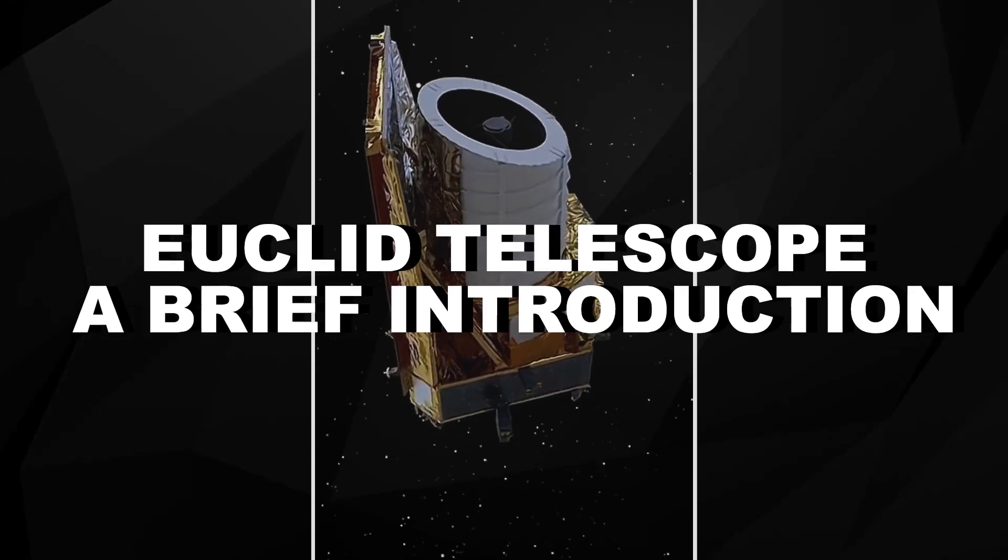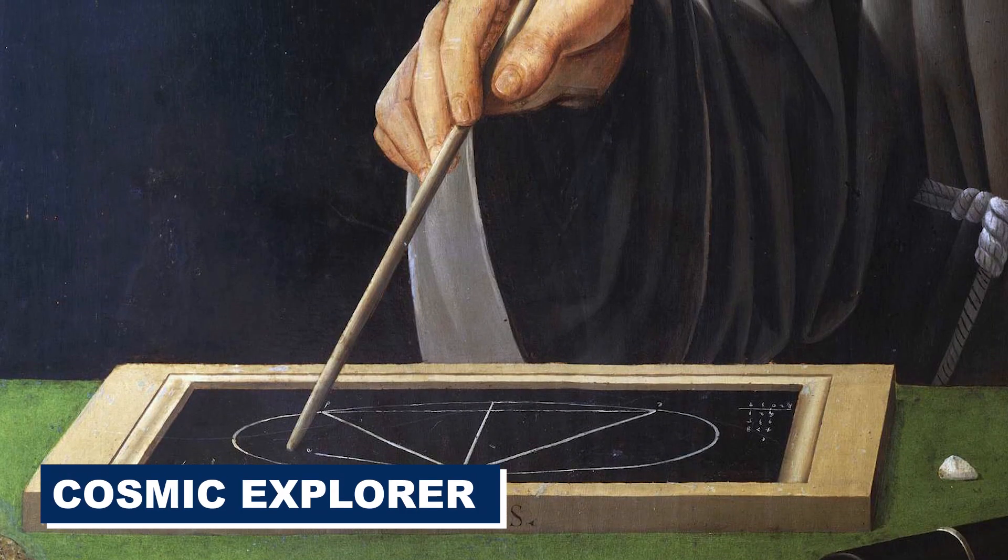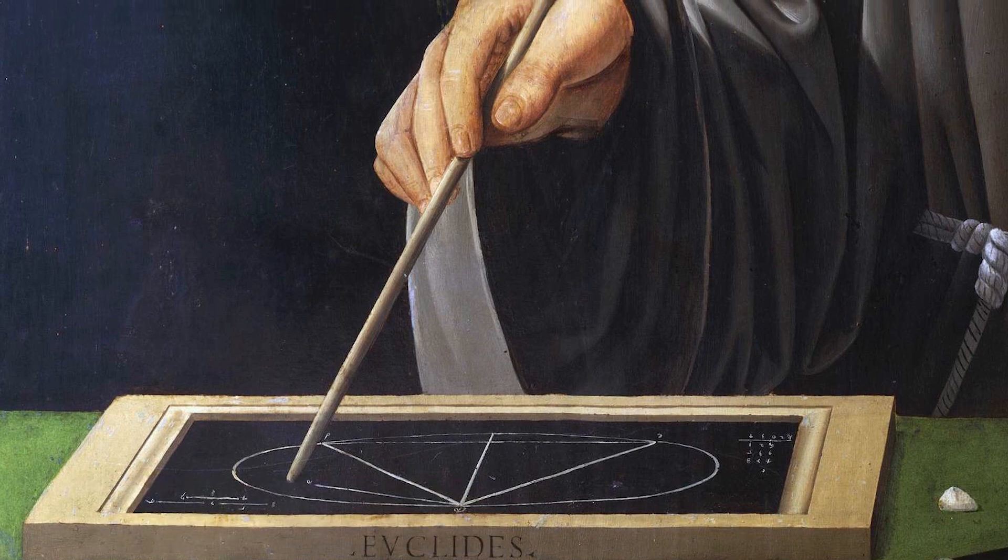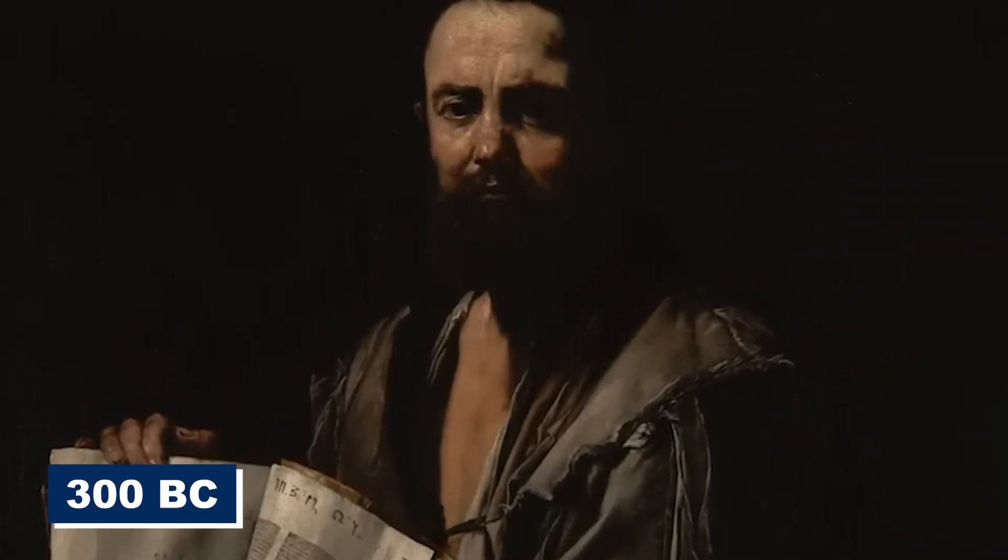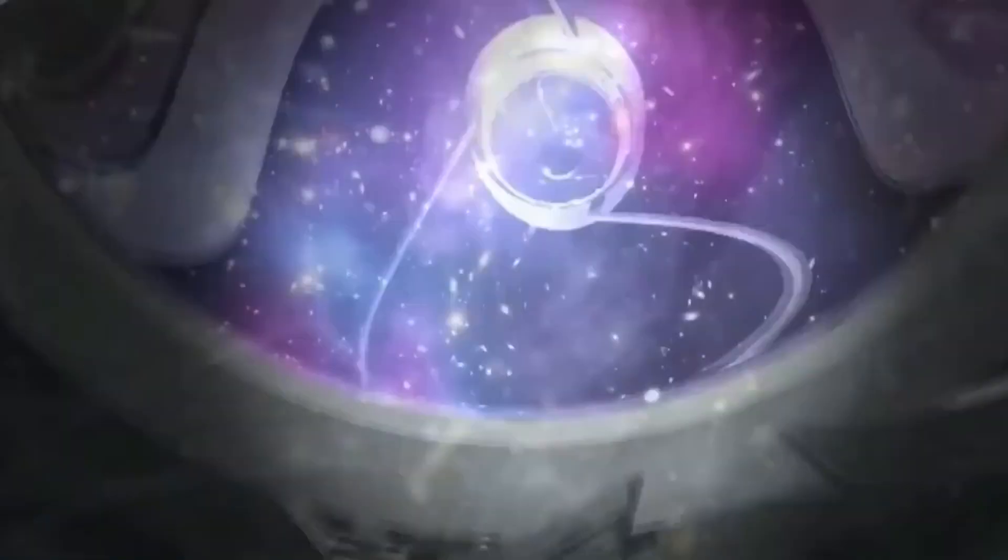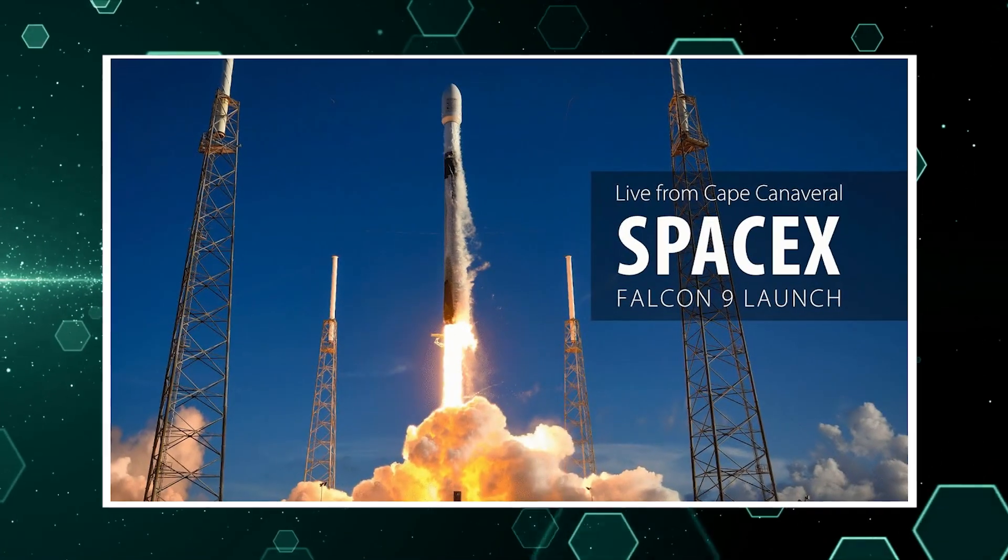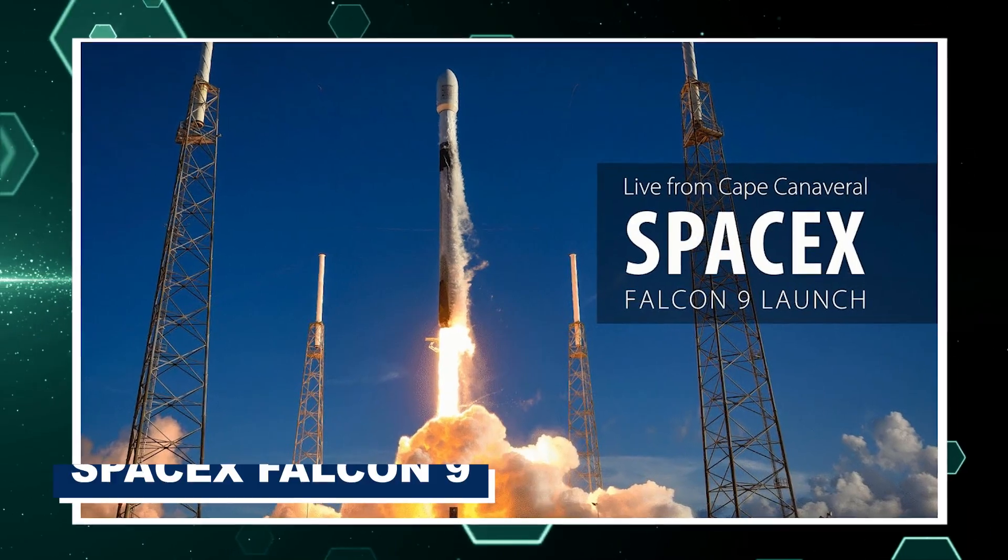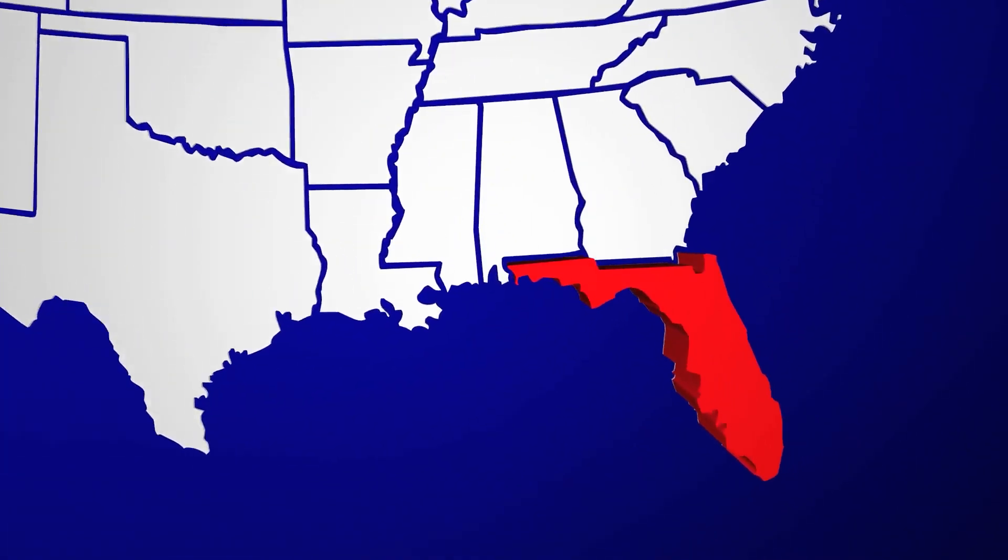Euclid Telescope, a brief introduction. Meet Euclid, our cosmic explorer named in homage to the ancient Greek mathematician Euclid of Alexandria, the geometry maestro from around 300 BC. Euclid began its cosmic adventure on July 28th, 2023, when it was launched into the vast unknown atop a SpaceX Falcon 9 from Cape Canaveral, Florida, USA.